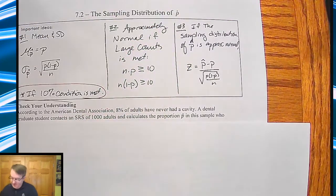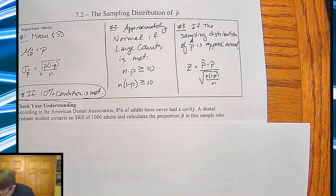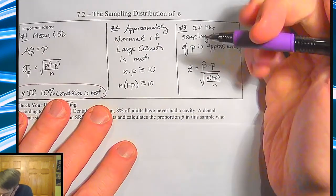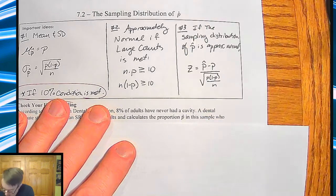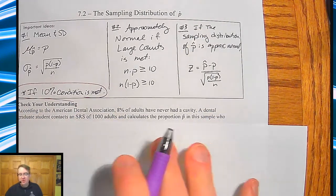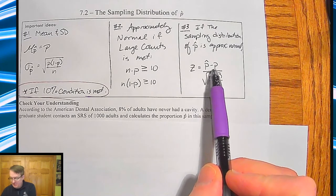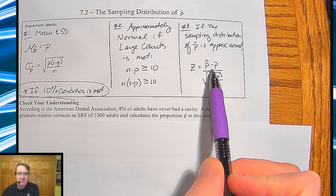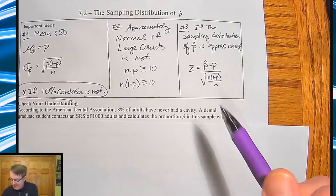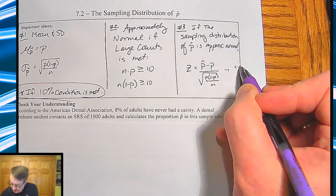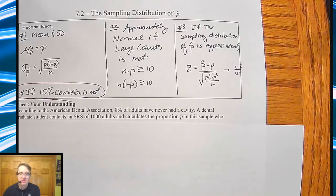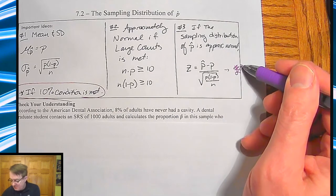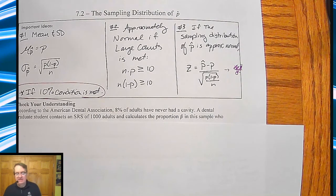And then last but not least, if the sampling distribution of p hat is approximately normal, then your z score is going to be p hat minus p. So observed mean minus typical mean divided by the standard deviation. Compare this back to x minus x bar all over standard deviation. So same setup, we're just substituting in all the different parts. And a lot of this you will have on your reference sheet anyway, but that's just so you can tie it back to something else.